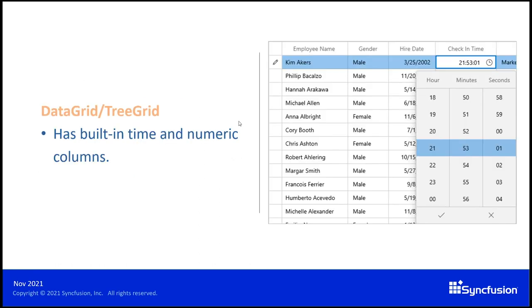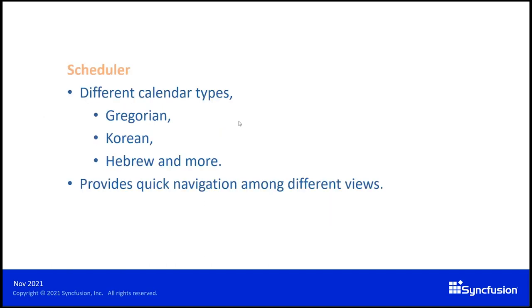Both tree grid and data grid controls come with numeric and built-in time columns that allow us to edit the time using a time picker and include only numbers in the numeric column. The scheduler control comes with different calendar types such as Gregorian, Korean, Hebrew, and so on. We also have an option to navigate quickly between different views in the header of the scheduler.